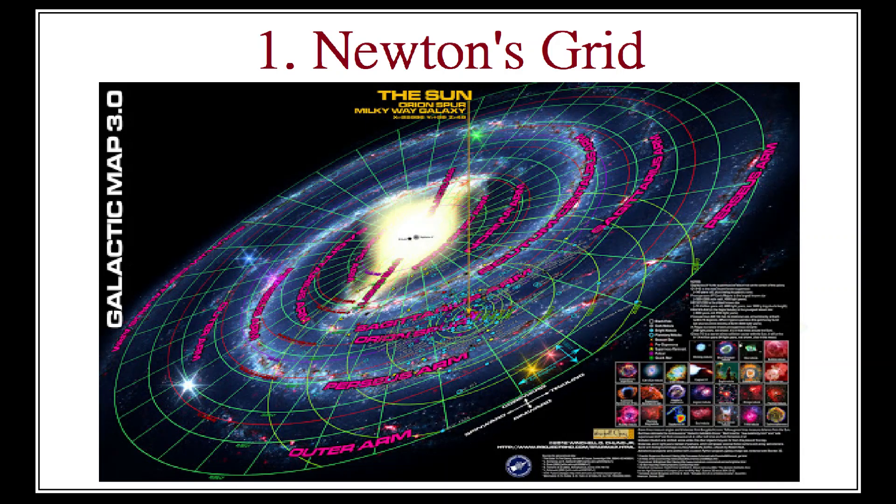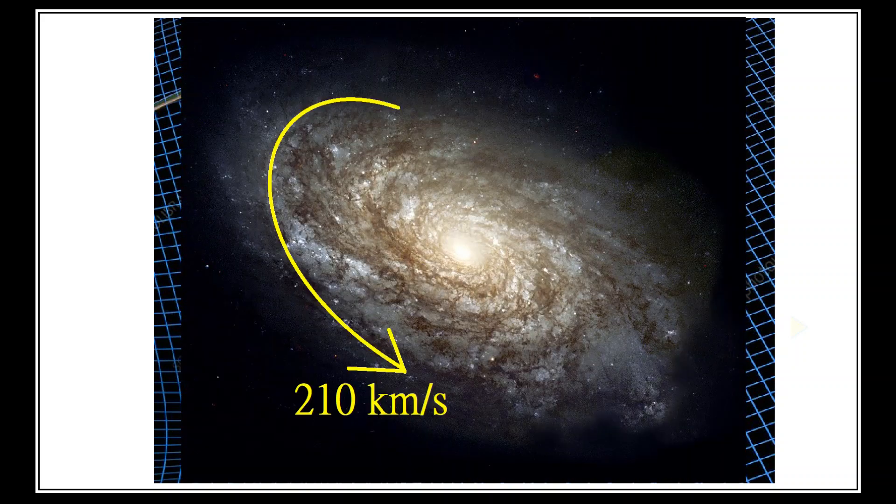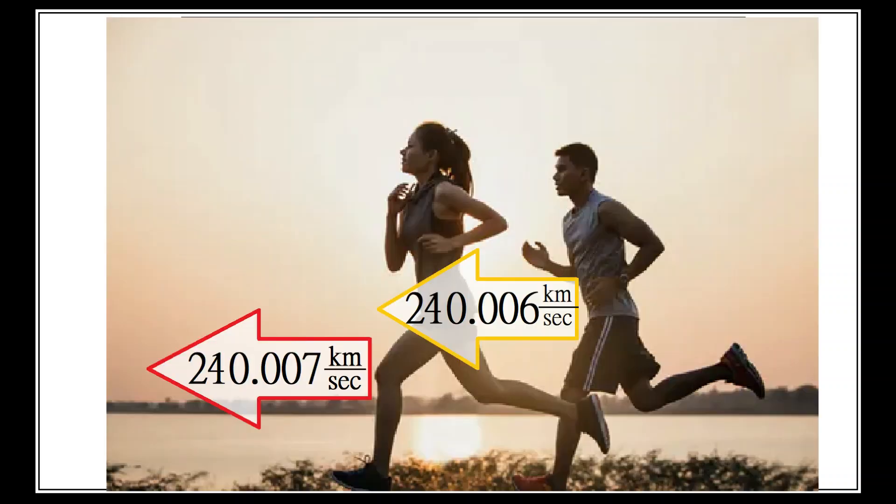Now, although everything is theoretically mappable onto a single grand universal grid, for practical purposes we have to specify things more. For example, we know that the Earth is swinging through space at 30 kilometers a second, and the galaxy is spinning at 210 kilometers a second. But when we are dealing with things on the Earth, it is redundant to include those numbers in our calculations.